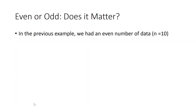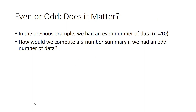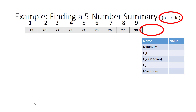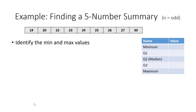In the previous example we had an even number of data points — 10. But what if we had an odd number? Let's repeat this process with n equal to 9. We simply eliminate the tenth data point, giving us nine data points. We've already put them in order from least to greatest. The minimum value is 19 and the maximum value is 30.